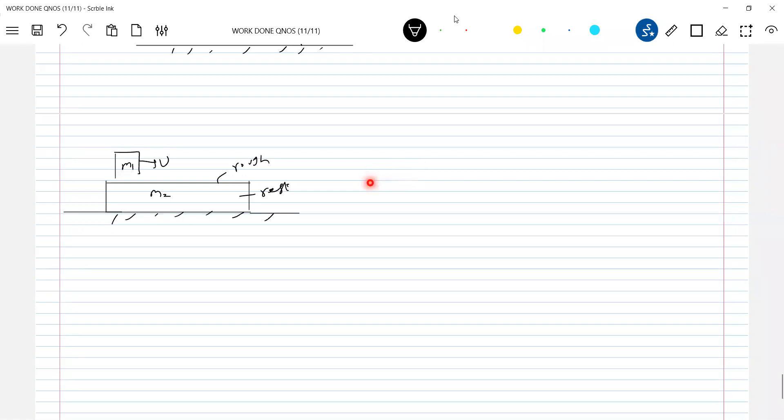This will be the diagram. The block, the plank will undergo displacement. The plank will be somewhere here and the block will be somewhere here.